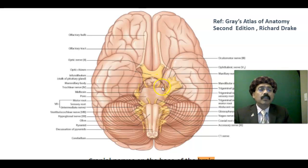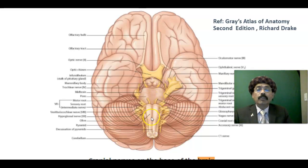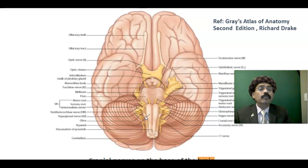The basis pedunculi is composed of the crus cerebri and substantia nigra of the midbrain. The interpeduncular fossa is the area between the peduncles. The pons has the basilar sulcus where the basilar artery lies in the living body. The medulla oblongata has the pyramid — an elevation due to pyramidal fibers — and the olive laterally, due to the presence of the inferior olivary nucleus.